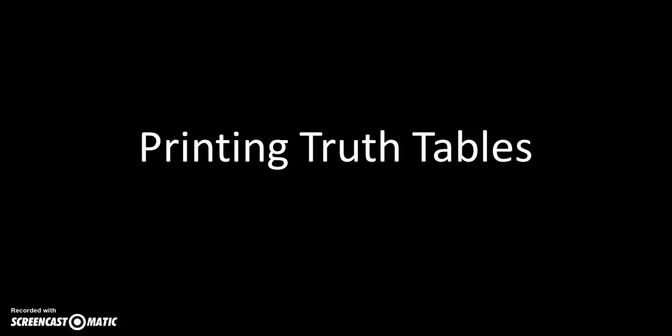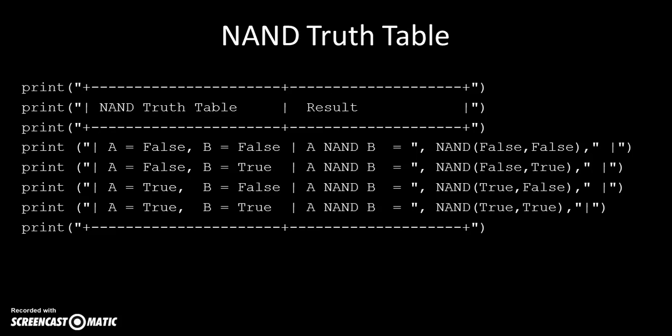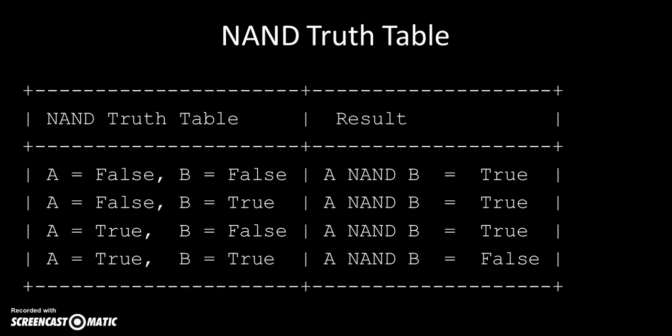If we want to print out some truth tables, I'll do two examples. For the NAND gate, we print A and B as false/false, false/true, true/false, and true/true, then calculate the values. If A is false and B is false, we get true. If A is false and B is true, we get true. If A is true and B is false, we get true. And if A is true and B is true, we get false. That's the NAND gate truth table created.